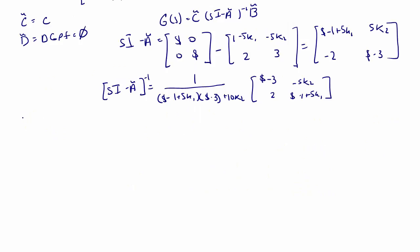So g of s is equal to 1 over the characteristic equation, which is (s minus 1 plus 5k1) times (s minus 3) plus 10k2, times c, which is [1, 2], times [s minus 3, negative 5k2; 2, s minus 1 plus 5k1].